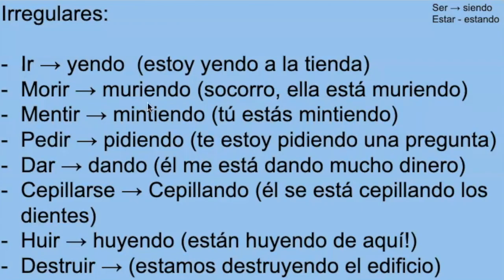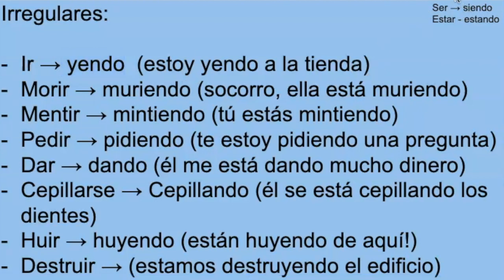Here are some other irregulars. Ir is an important one — it's just yendo, so it's like estoy yendo. Here are ser and estar, though you don't really use those in the progressive. And an example of a reflexive verb: él se está cepillando los dientes — he is brushing his teeth. He's currently brushing his teeth, so that's why you'd use the present progressive tense.